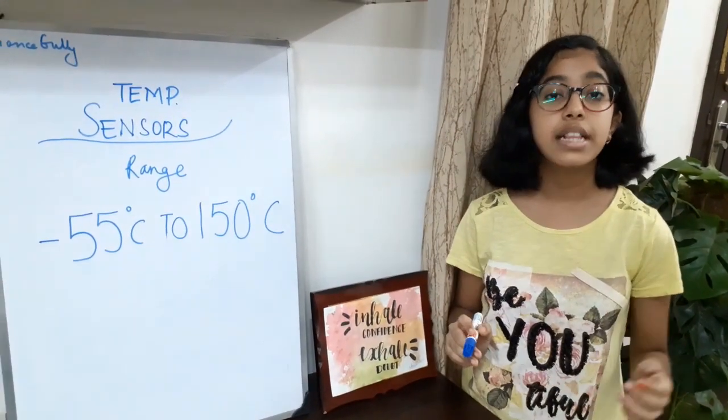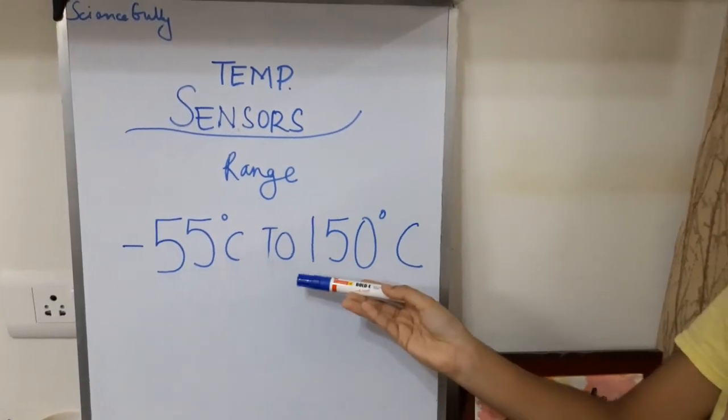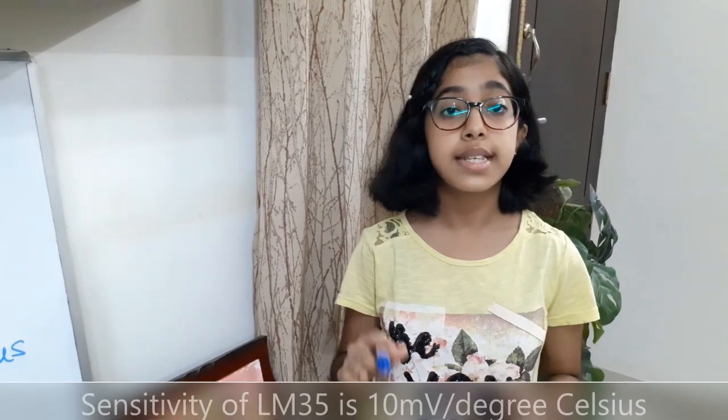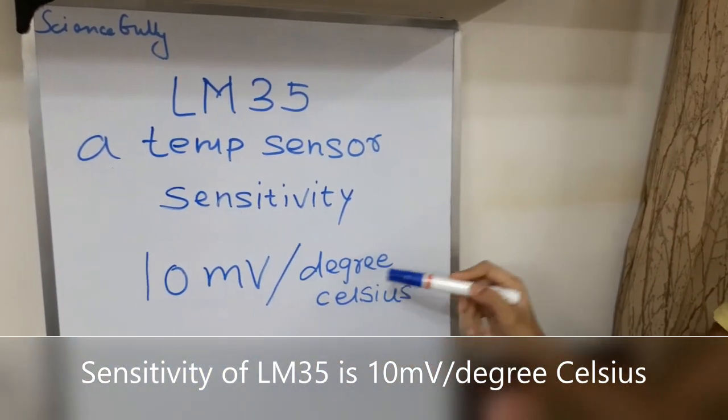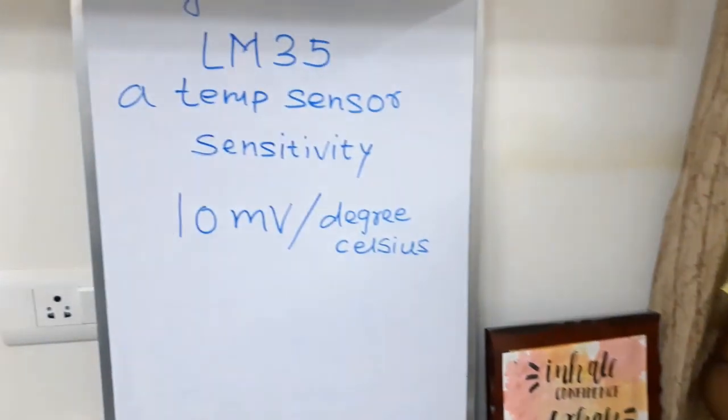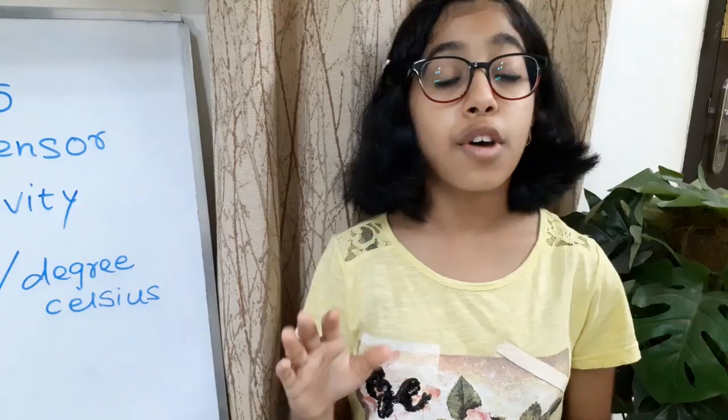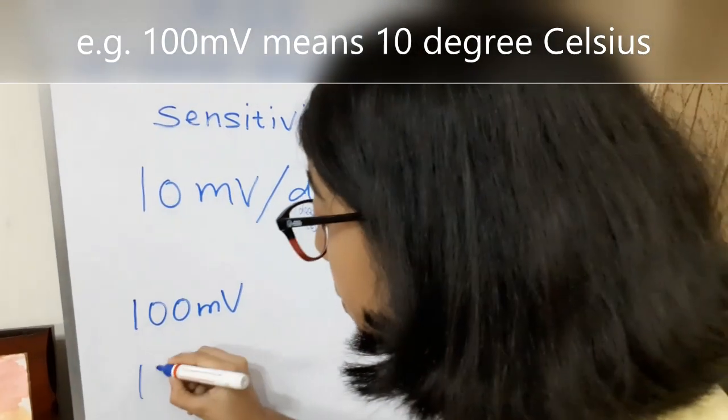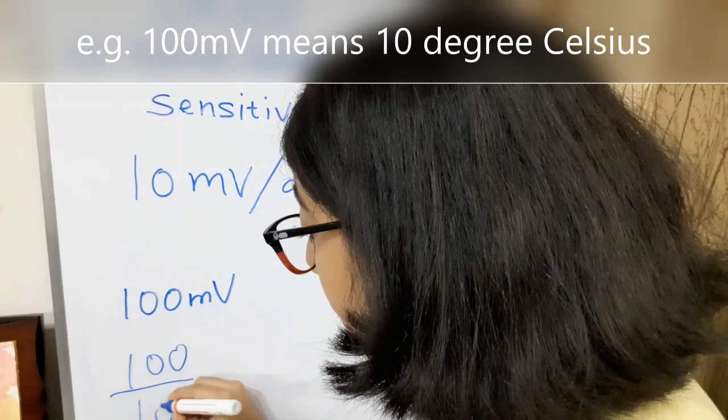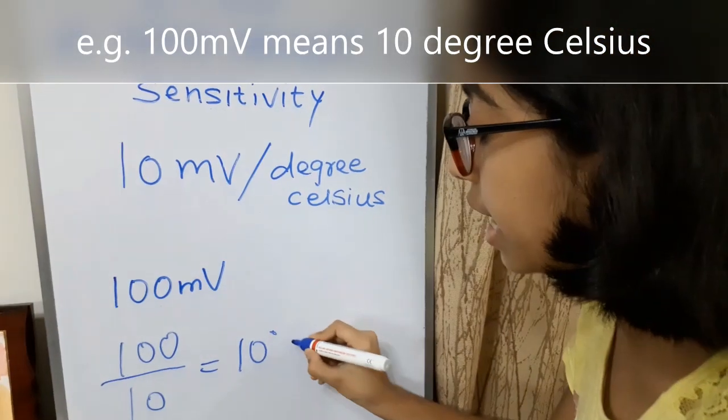It can measure the temperature in the range of minus 55 degrees Celsius to 150 degrees Celsius. The sensitivity of LM35 is 10 millivolts per degree Celsius. So, what does it mean? It means that 10 millivolts represent 1 degree Celsius. For instance, the output we get is 100 millivolts. So, 100 millivolts divided by 10 will give us 10. So, the answer will be 10 degrees Celsius.